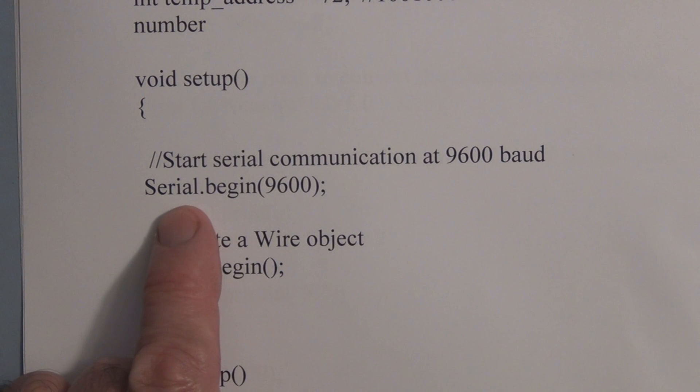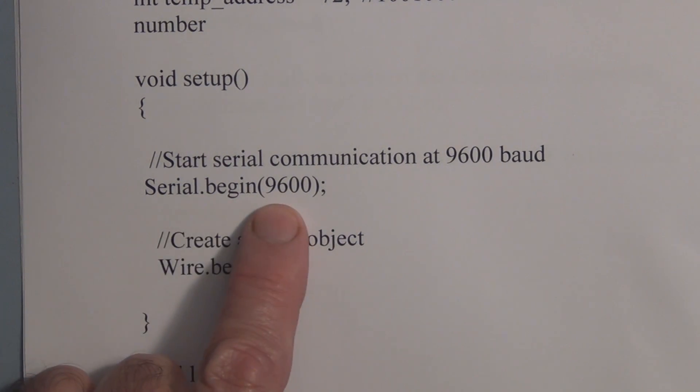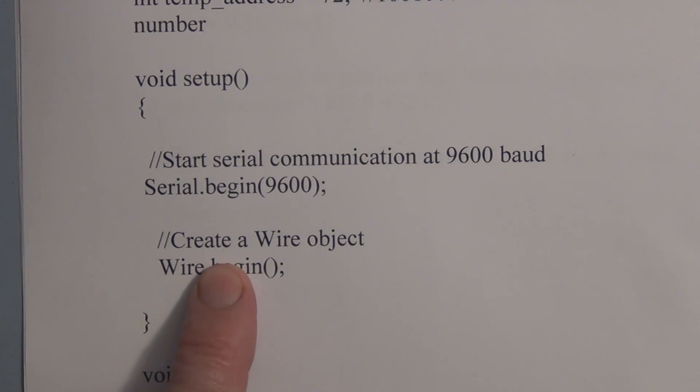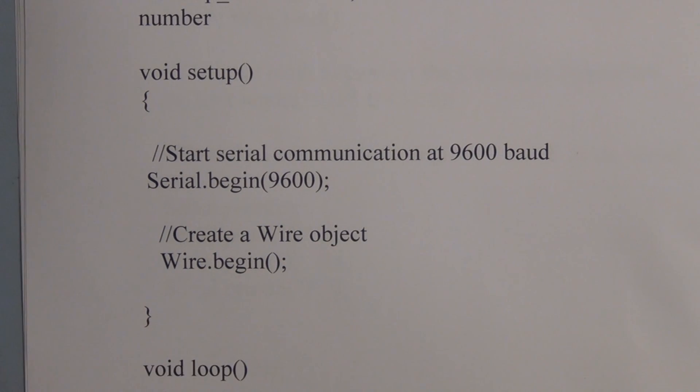We have serial dot begin at 9600 baud. And then we create the wire object. So we have wire dot begin.